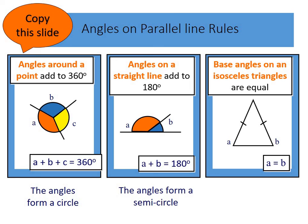And finally, one of the rules we looked at last week. Base angles on an isosceles triangle are equal. Remember, the two sides will also be equal in length. And you're looking for a puffy cheek shape.